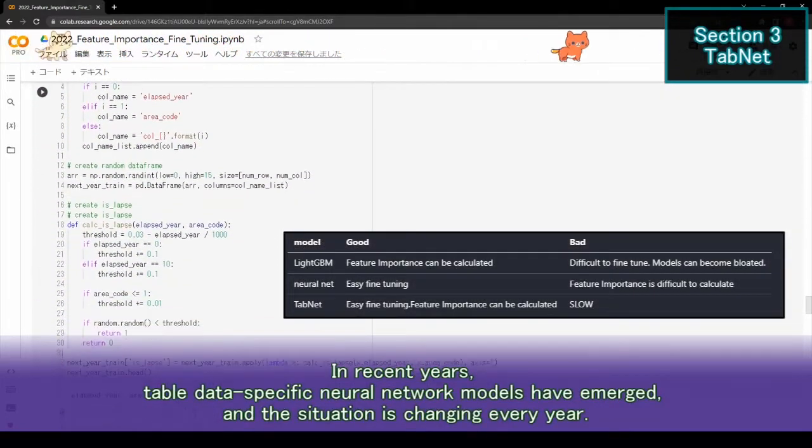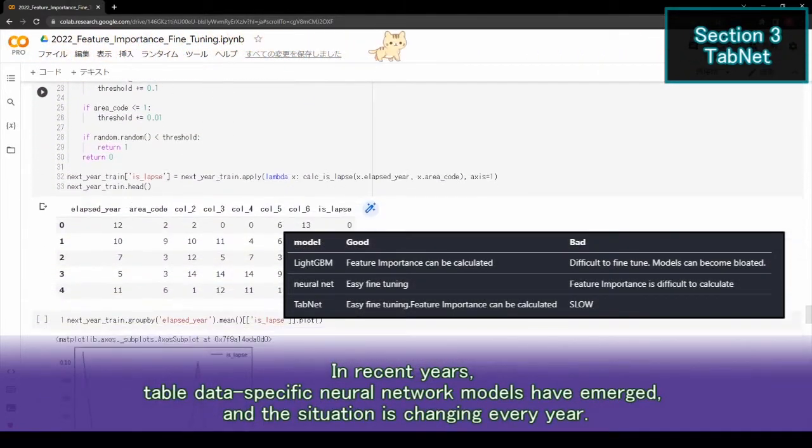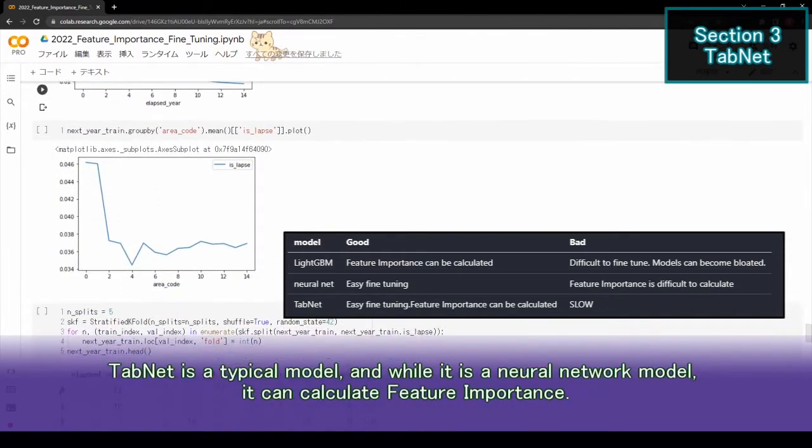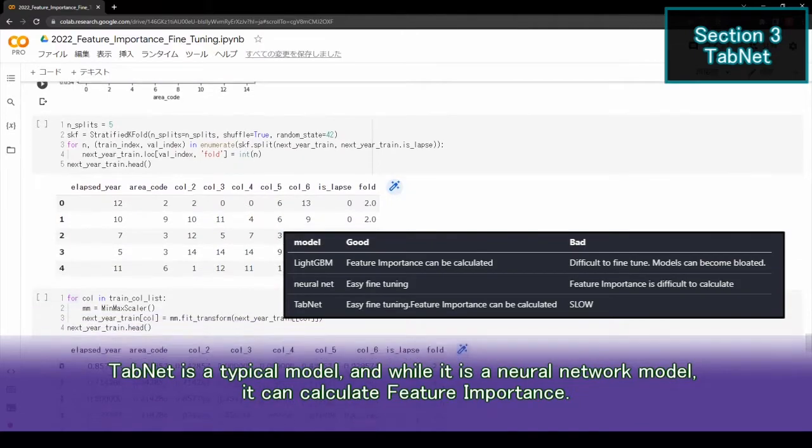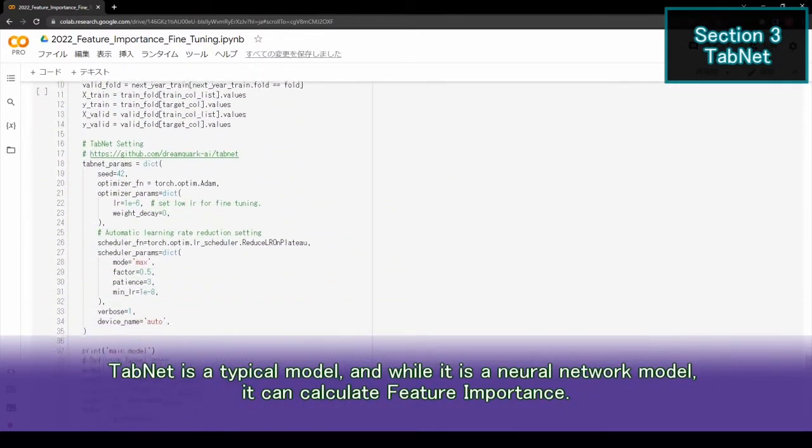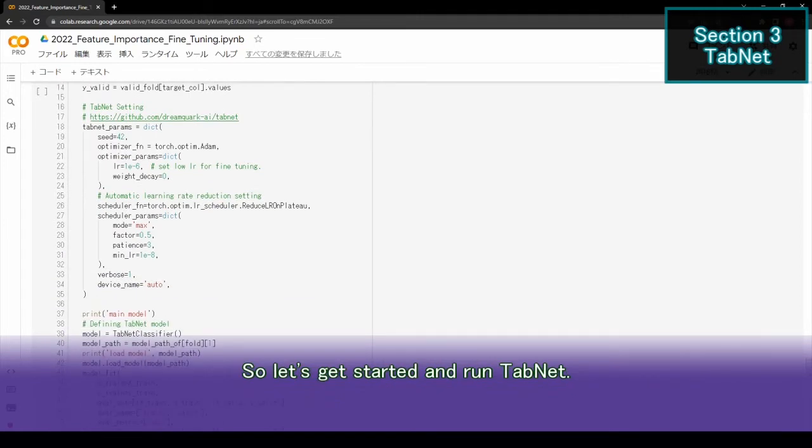In recent years, table data-specific neural network models have emerged, and the situation is changing every year. TabNet is a typical model, and while it is a neural network model, it can calculate feature importance. So, let's get started and run TabNet.